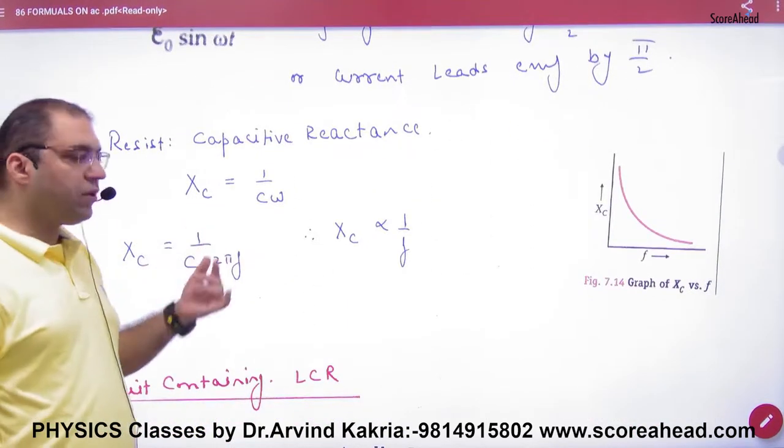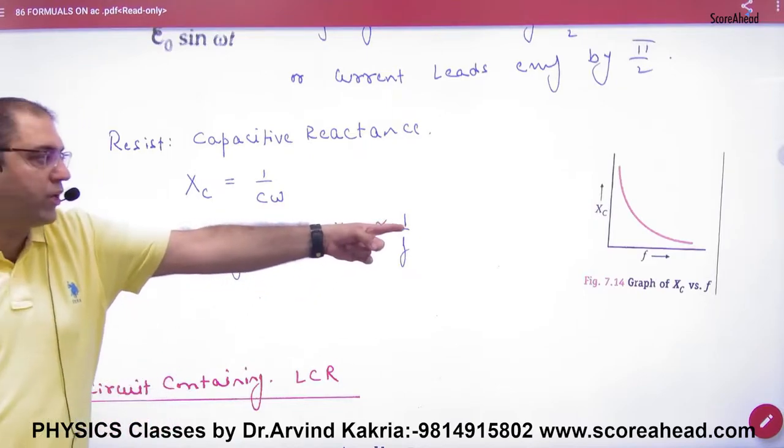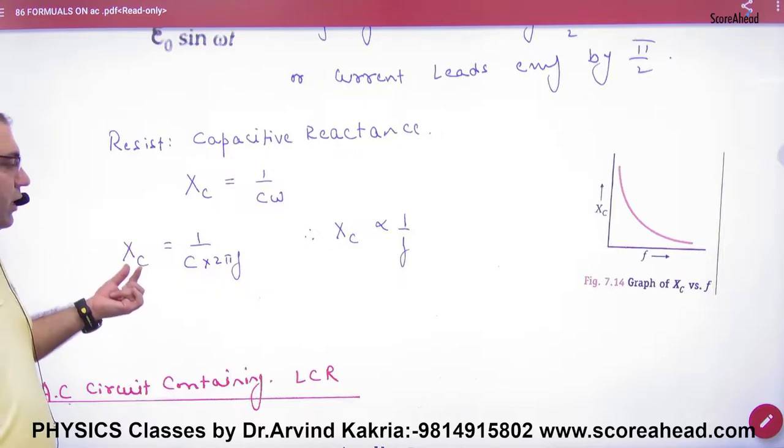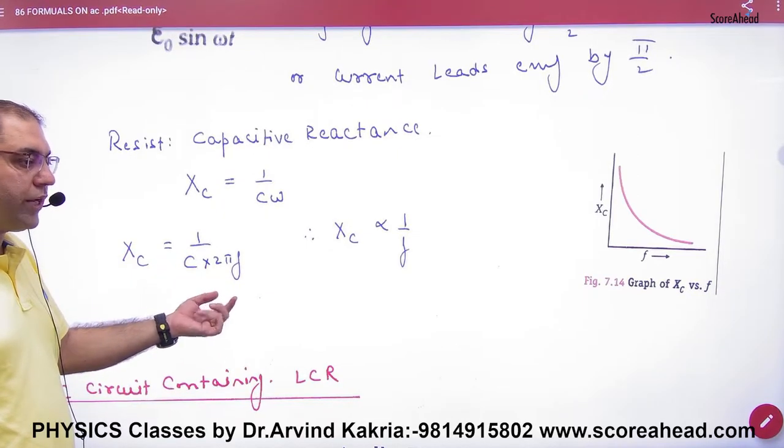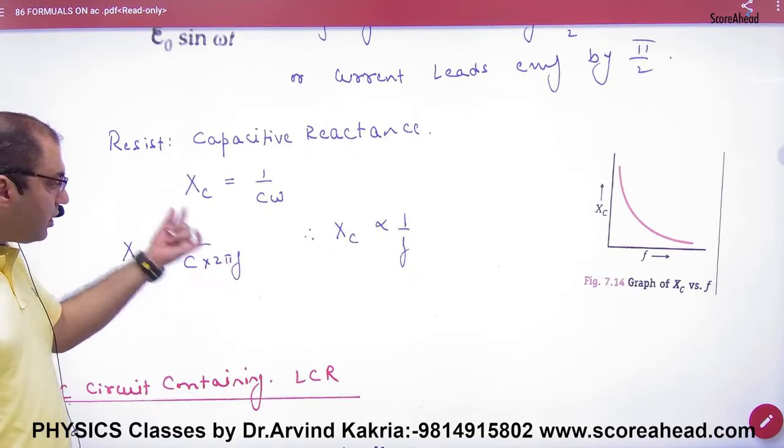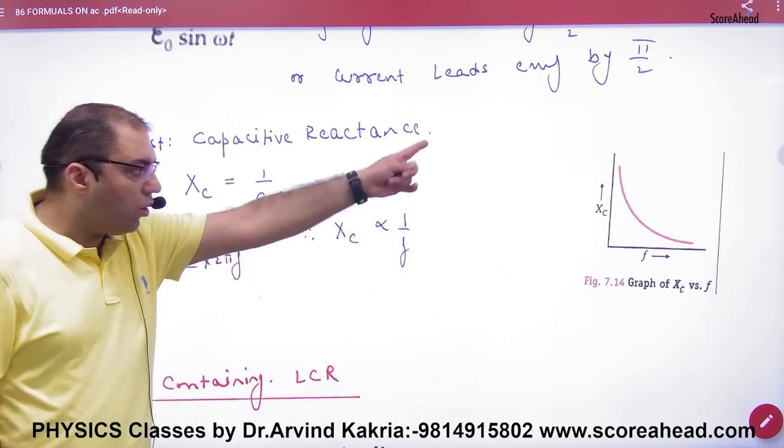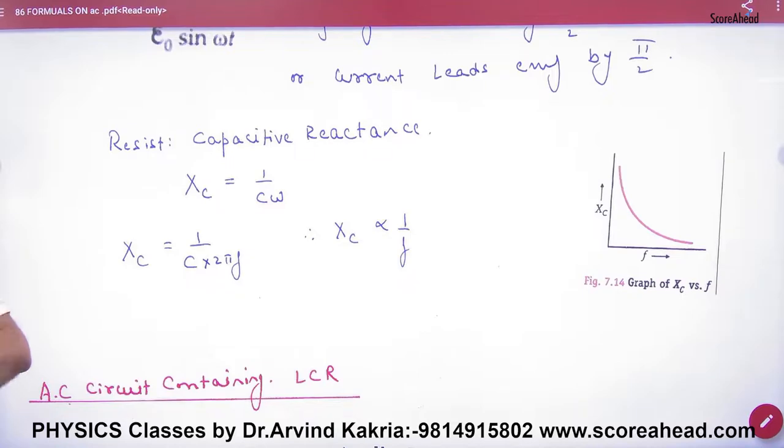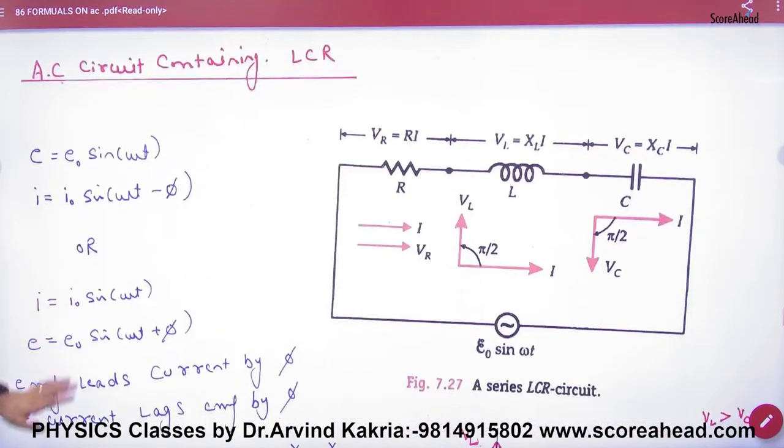Capacitive reactance. Xc is equal to 1 by C omega. This is important in the paper that Xc is 1 by C omega. Omega is 2 pi frequency. So Xc is inversely proportional to frequency. So this graph will become this.